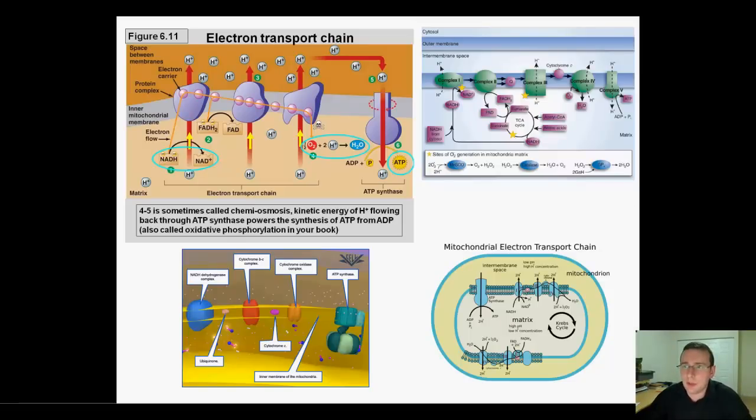In the previous video we left off talking about the ETC and the idea being that you create such a strong electrochemical gradient of hydrogen ions in the inner membrane space that all these hydrogen ions want to jump inside but they can't because the membrane is selective against charged particles.